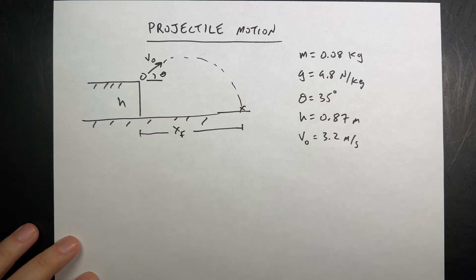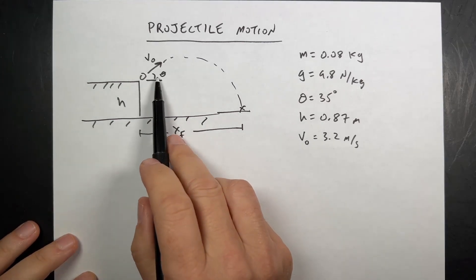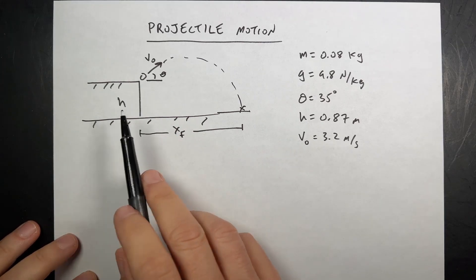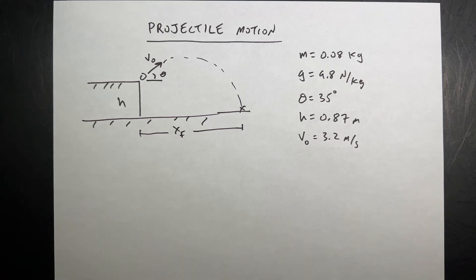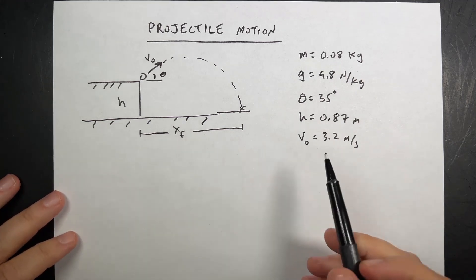And we want to know how far it goes. So suppose that we know the initial velocity, we know the initial angle, we know the height and the mass, which I kind of put in there just to say, hey, we don't really need the mass. So where does it land?